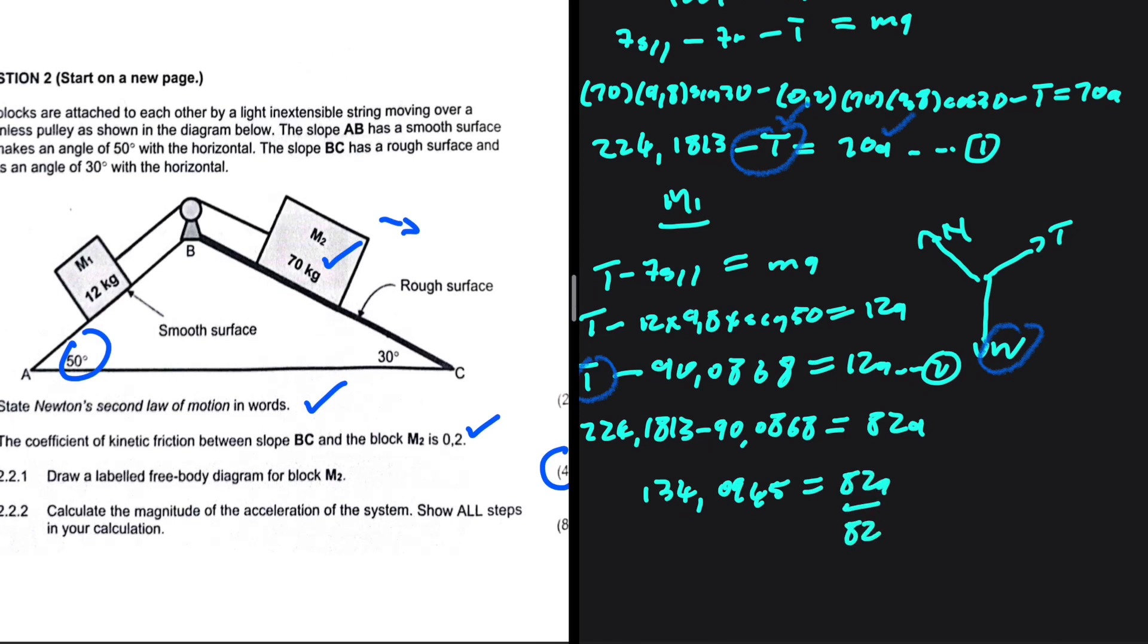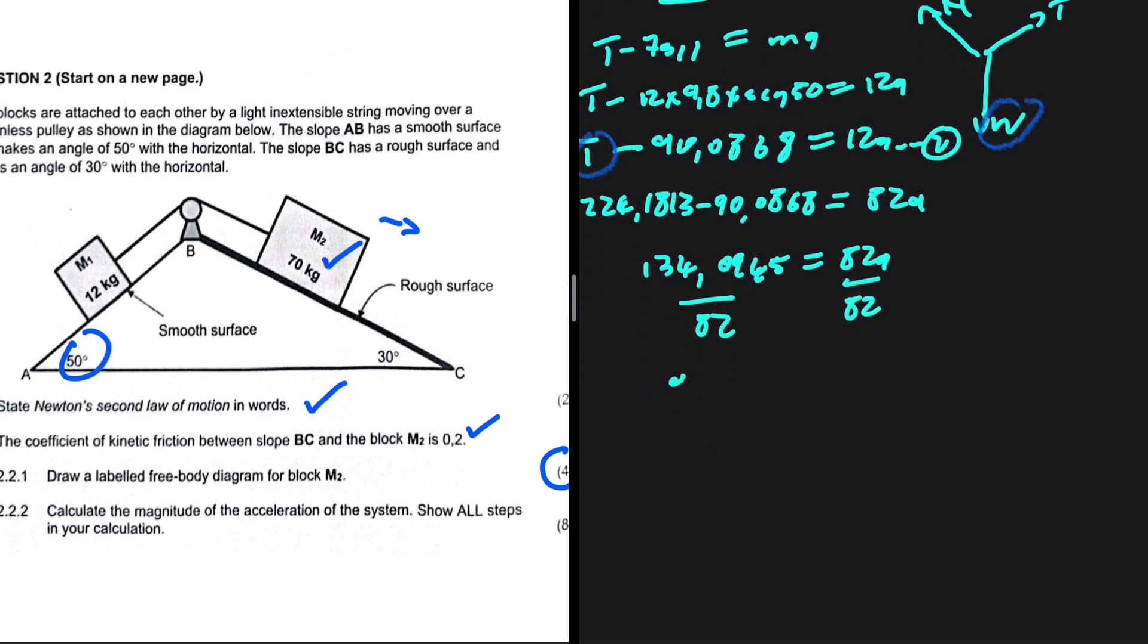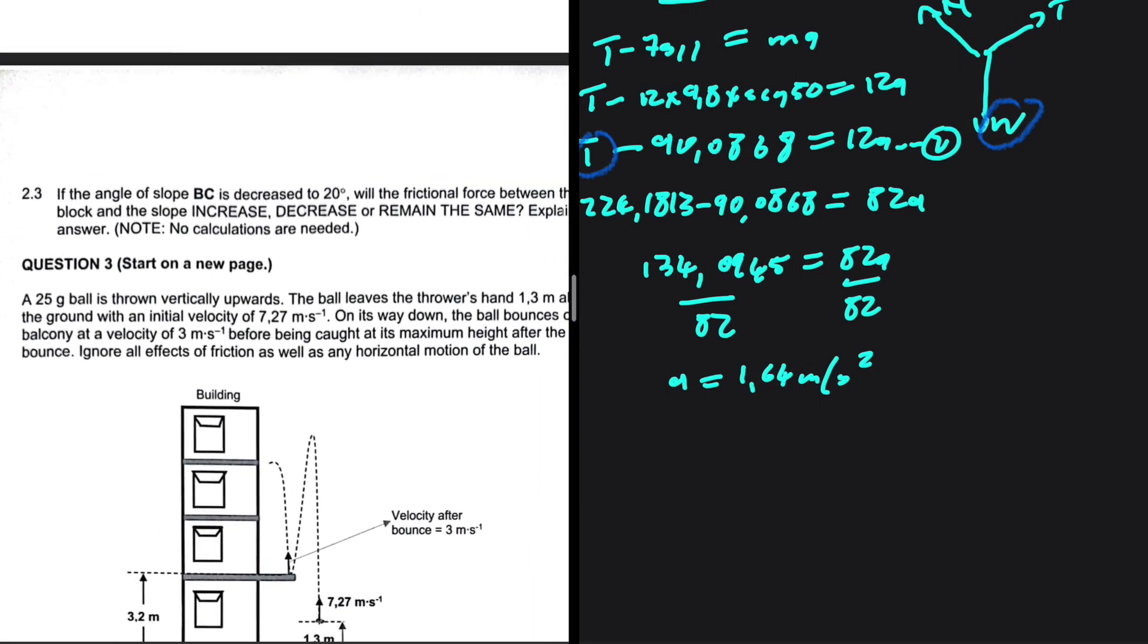We need to divide both sides by 82 obviously. And if we do that, we're going to get an acceleration that is close to 1.64 meters per second squared. We are only interested in the magnitude. We don't need to indicate the direction.